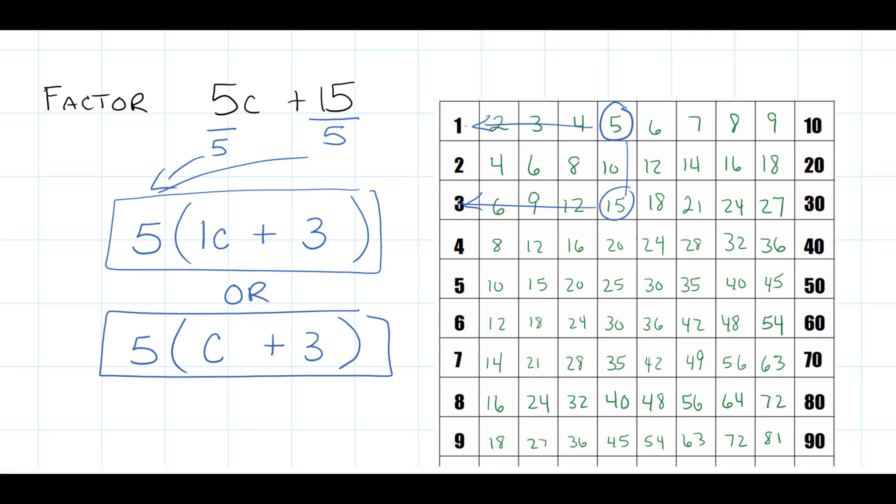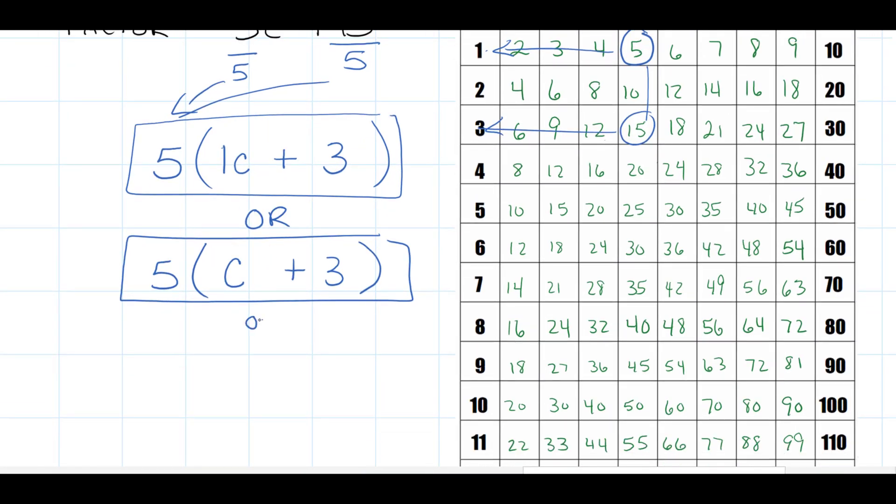We absolutely can use the commutative property here. If I wanted to continue, commutative property would allow me to keep 5 outside the parentheses, and since we have addition, I could put the 3 first and the c second, and it would still give us a correct answer. Five times 3 is 15, five times c is 5c, so the expression would still be the same. Great question.